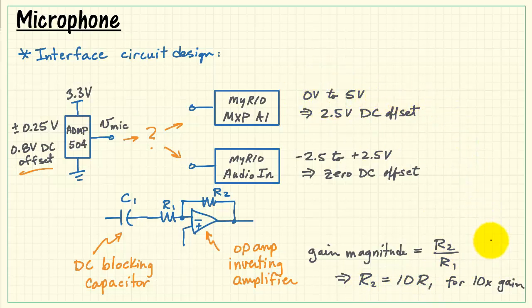As we look at the difference between the analog input and the audio input, we see that it really, at this point, revolves around the offset voltage. If we ground this end of the op amp, we produce a 0 DC offset. To accomplish the 2.5 volt DC offset, we simply need to raise the non-inverting terminal up to 2.5 volts. We can accomplish that with a voltage divider based on two equal-valued resistors attached to the 5 volt source.